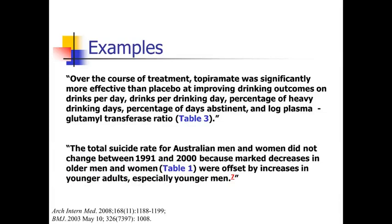Here's another example. This one says: the total suicide rate for Australian men and women did not change between 1991 and 2000, because marked decreases in older men and women were offset by increases in younger adults, especially younger men. You can imagine the table just lists suicide rates from 1991 to 2000, broken down by overall, gender, and age. This is a high level summary — the author is saying there's no overall change over time, but looking at subsets, there's actually a decrease in one group and an increase in another.